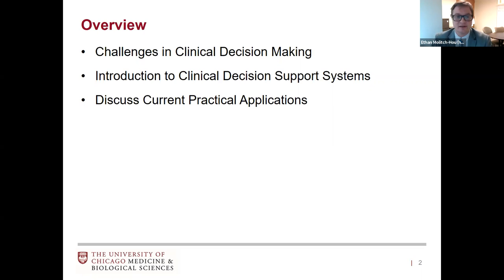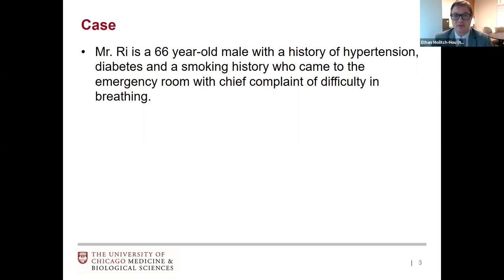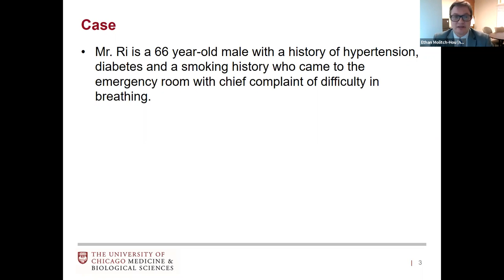I want to start with a case. Mr. Rey is a 66-year-old gentleman with a history of hypertension, diabetes, and a smoking history who came to the emergency room. Those of us clinically trained in medicine are probably already thinking of your differential diagnosis. He comes in with shortness of breath — is it new onset heart failure from his long-standing hypertension? New COPD from his smoking history? A new lung cancer? Or given the climate of our times, a new COVID diagnosis?